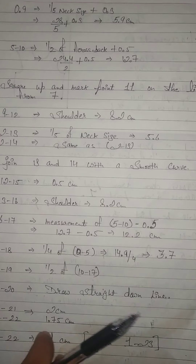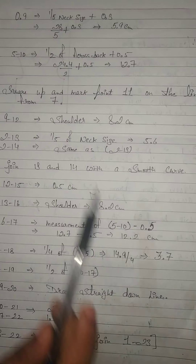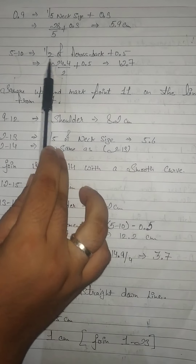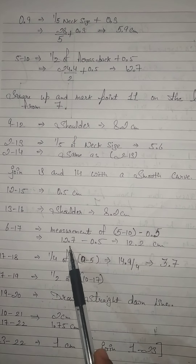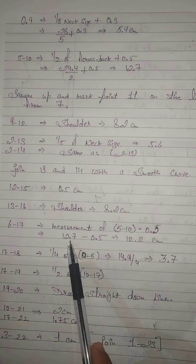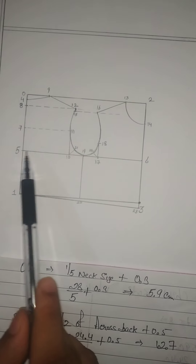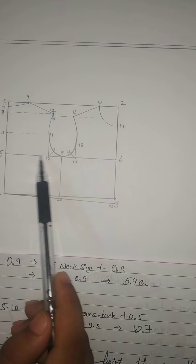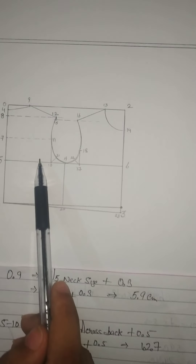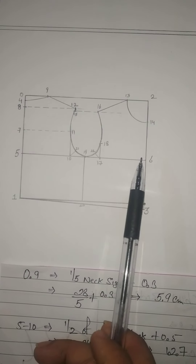After that, mark point number 17. Point 16 to 17 uses the measurement we already calculated for 5 to 10, that is half of back across, but minus 0.5. So 5 to 10 is 12.7 cm, minus 0.5 gives 12.2 cm. This means whatever measurement you mark for 5 to 10 at the back, 6 to 17 at the front will be 0.5 cm less, because the back is broader than the front.